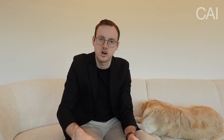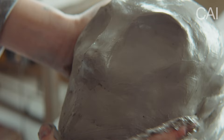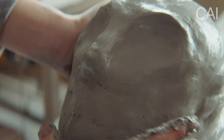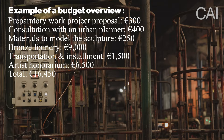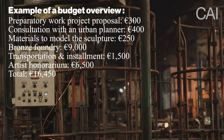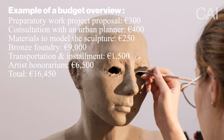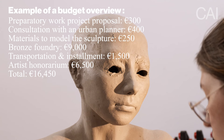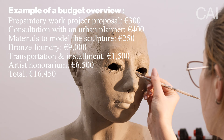To calculate your honorarium you can use the same formula without adding production costs, because those will be added in the budget overview automatically. For instance, if you are a new emerging artist installing a first public artwork — a large bronze sculpture of two meters high and wide and 50 centimeters deep — your budget overview would look like: preparatory work for the project proposal 300 euros, consultation with an urban planner 400 euros, materials to model the sculpture 250 euros, going to the bronze foundry to outsource the production process 9,000 euros, transportation and installment 1,500 euros, and then the artist's honorarium based on those dimensions and your index range 6,500 euros.